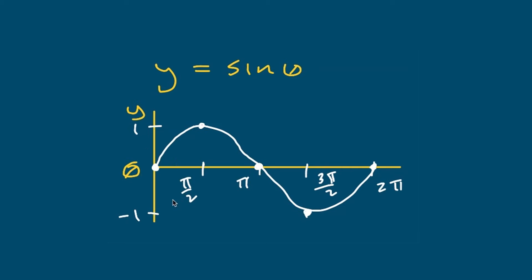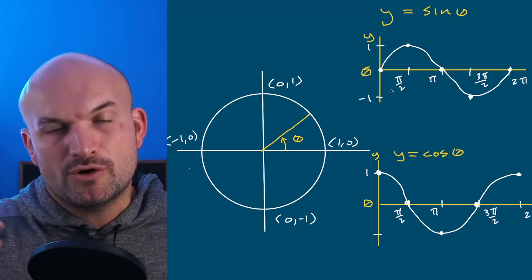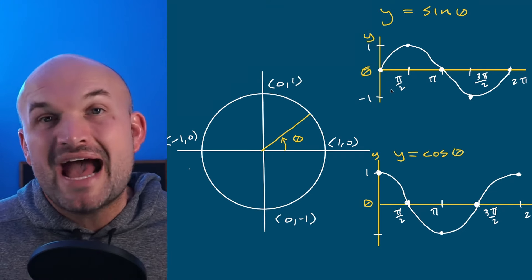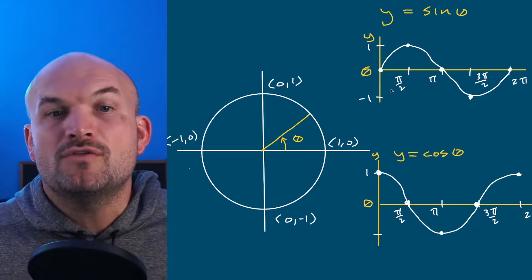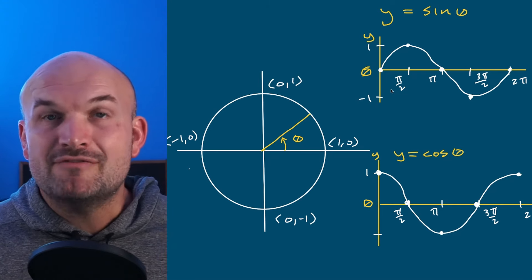I'll put a dot at zero. At the next angle, pi halves, the y-coordinate equals one, so I'll put a dot at (π/2, 1). At pi — halfway around the circle — the y-coordinate is zero, so a dot at (π, 0). At three-pi-over-two, the y-coordinate is negative one. And at two pi, all the way around, we're back. By connecting all of these dots, you can see we have the shape of the sine graph. The graph keeps repeating as you continue around the circle in either direction — this is just the initial period.